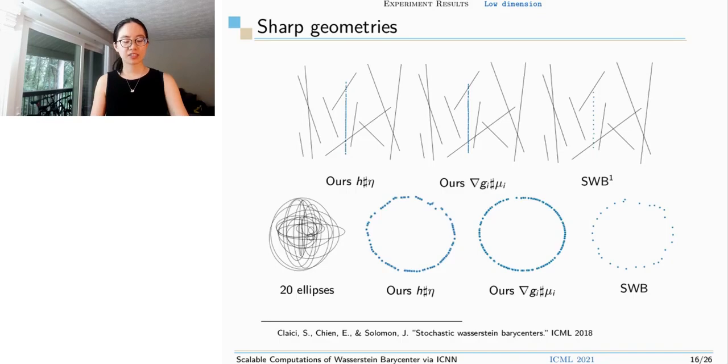This slide shows our method also performed well on sharp geometries such as lines and ellipses. The marginal distributions are some one-dimensional manifolds such as line or ellipse. We compare with the stochastic Wasserstein barycenter, but it has some difficulty in giving more samples due to expensive computation.